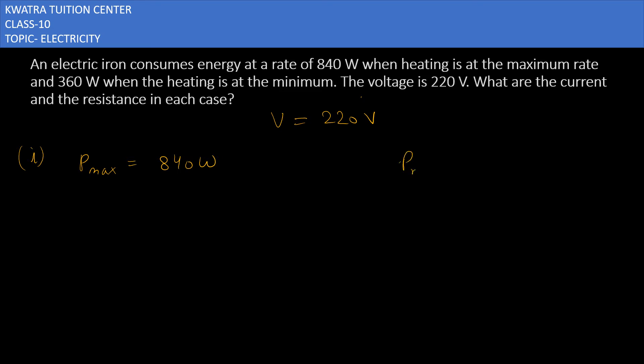So here we will do both calculations. In the first case, we will find out current. I will be equal to P over V, so it is 840 over 220. For the calculation, we will do zero-zero cancel. 84 over 22, this will give you 42 over 11, and 42 over 11 will be 3.82 amps.